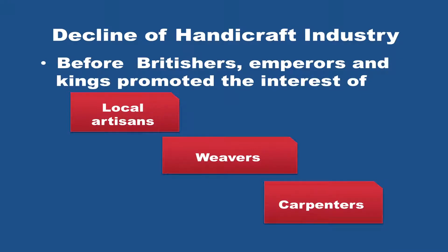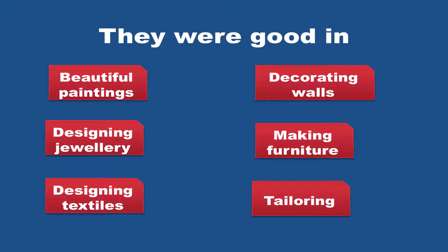Handicraft industry was one of the flourishing industries in India during the British rule. Before the coming of the British, emperors and kings promoted the interest of local artisans, weavers and carpenters, and because of that the Indian handicraft industry flourished a lot. The Indian artisans were very good in beautiful paintings, designing jewellery, designing textiles, decorating walls, making furniture, tailoring, etc.